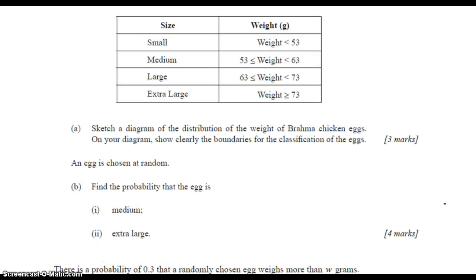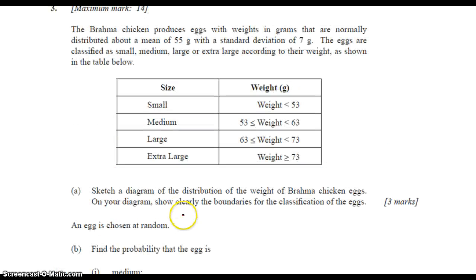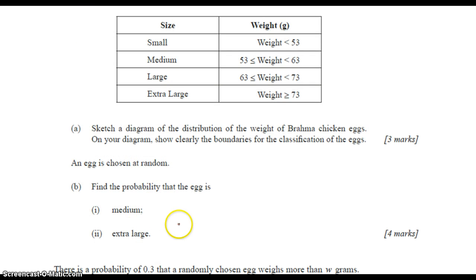Secondly, you can see the probability that an egg is medium or is extra large. You have to enter the information from the problem—standard deviation and mean—and use your calculator to figure that out just like I showed you before.